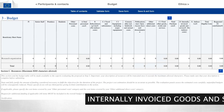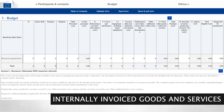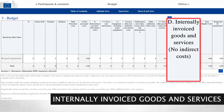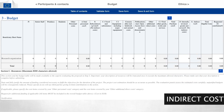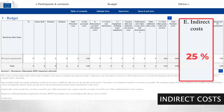You may also budget internally invoiced goods and services provided for the project by the host institution. These are unit costs calculated based on the methodology of the institution. They typically cover self-produced consumables or the use of facilities such as a greenhouse. The indirect costs are calculated automatically in the budget table as 25% of direct costs excluding subcontracting and internally invoiced goods and services.